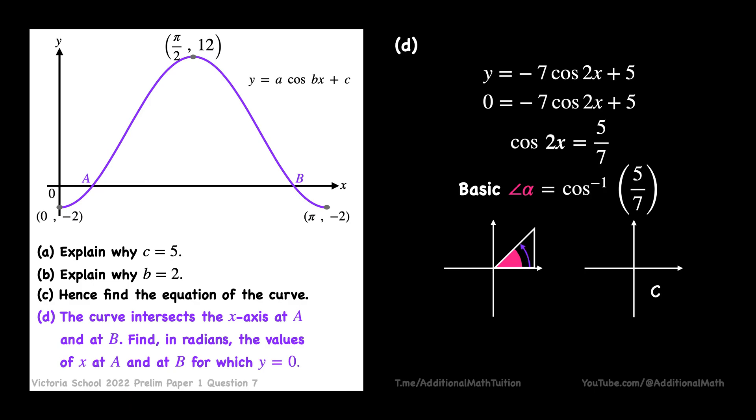When 2x is in the first quadrant, 2x = α. When 2x is in the fourth quadrant, 2x will be equal to 2π - α. Solving for x will get a value of 0.388 at A and 2.75 at B in three significant figures. And that's the answer.